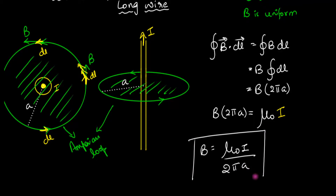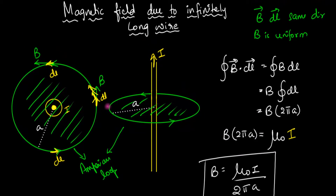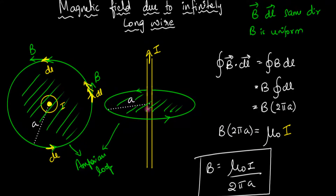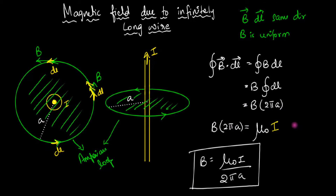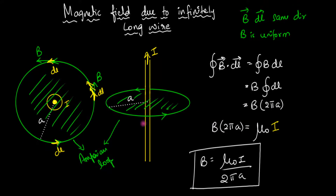Look at this — how many steps did we require? Just a couple of steps, no integrals. This is the power of Ampere's law. In certain very special cases — and those special cases are when you have cylindrical symmetry — if you draw a cylinder around this wire, everywhere on that cylinder the strength of the magnetic field must be uniform. In such cylindrical symmetries, and also in some other specific cases, Ampere's law is extremely useful.